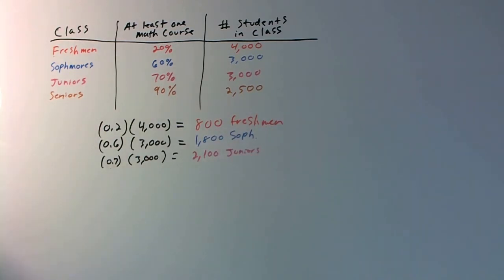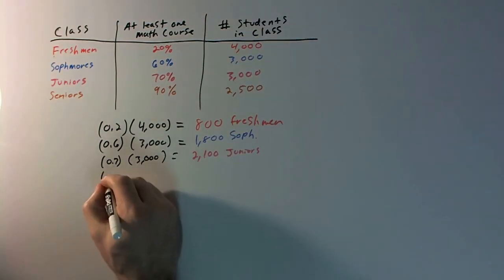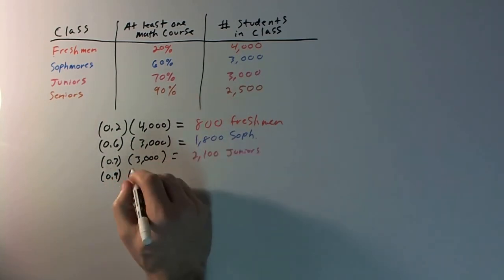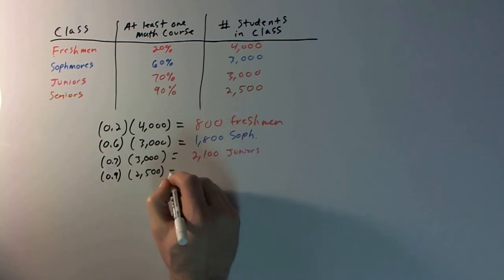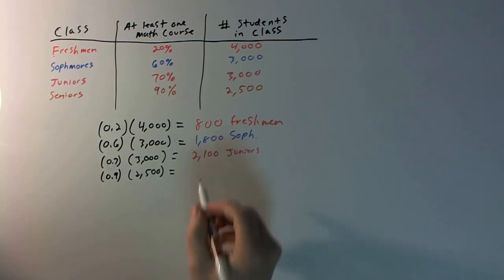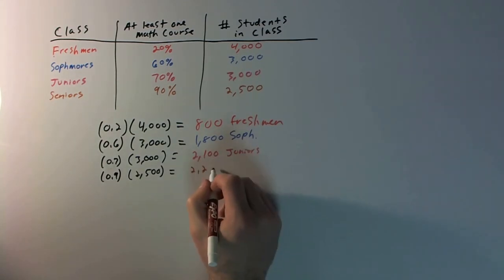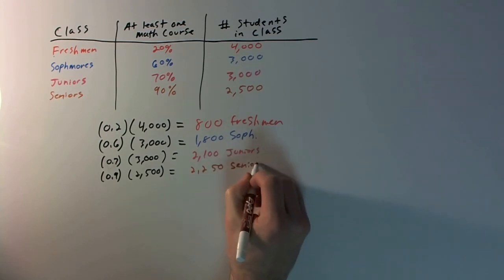And then for the seniors, we know 90% of the seniors have taken at least one math class, times 2,500 seniors in the senior class. And that's going to be 2,250 seniors.